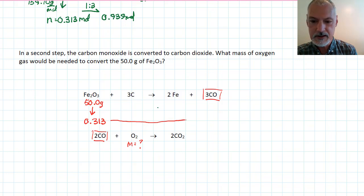So, here's the first step. I take this. The ratio that exists between these is 1 to 3. So, I'm going to produce 0.939 moles of carbon monoxide. I'm now going to take this number and bring it down here.